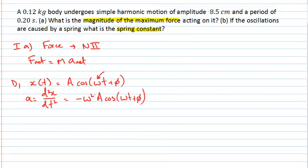You may want to do that in two steps, finding the velocity first with the first derivative, and then the second derivative of the acceleration. And from here, we can see that the magnitude of the maximum acceleration is given by omega squared times the amplitude.